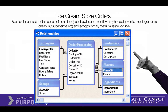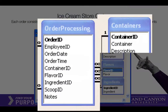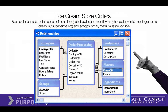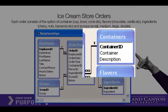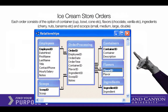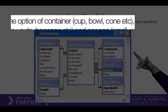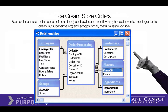Let's take a look at a full app — this is an ice cream store. Looking at the center first, there's a table called order processing and everything appears to be attached to it. There is a relationship between order processing and containers. A container could be a bowl, a cup, a cone, or a spoon. That's a one-to-many relationship between orders and containers.